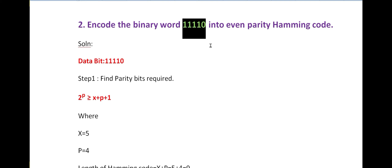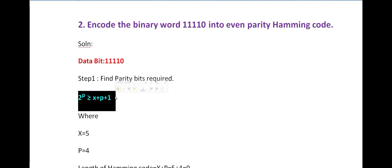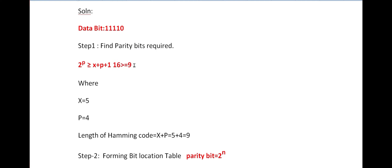The length of the data bit is 5; in the previous problem x was 4, now x is equal to 5. The first step is always finding the number of parity bits required. The formula is 2^p ≥ x + p + 1. With x = 5, if p = 3 the condition is not satisfied, so p = 4. Substituting: 4 + 5 + 1 = 10, and 2^4 = 16, which is ≥ 10, so the condition is satisfied.